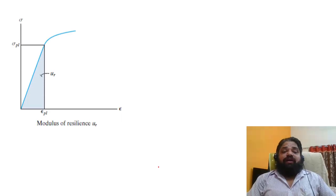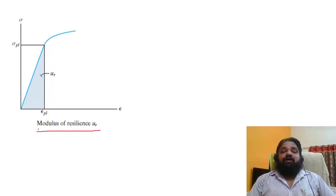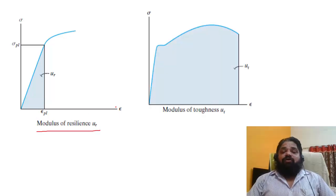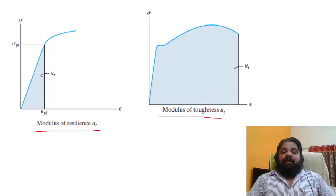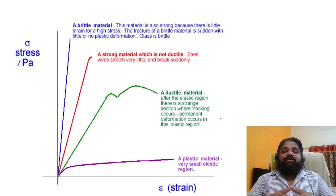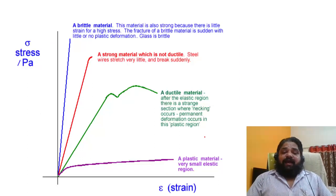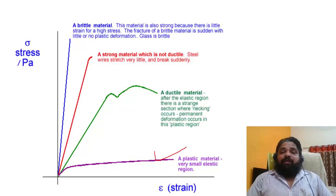The energy stored within the elastic limit or up to the proportional limit is called the modulus of resilience. From the start up to the breaking point, the total energy stored in the material is called the modulus of toughness. Before discussing further, I have shown more cases — a plastic material with a very small elastic region, a ductile metal, a strong material, and a brittle material.